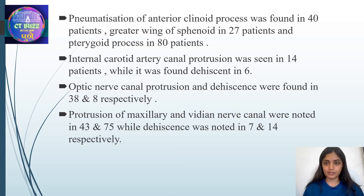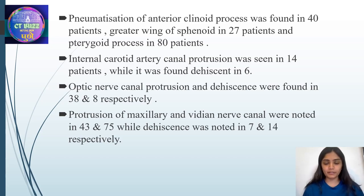Pneumatization of the anterior clinoid process was found in 40 patients, pneumatization of the greater wing of sphenoid in 27 patients, and pterygoid process in 80 patients. Internal carotid artery canal protrusion was seen in 14 patients, while dehiscence was found in 6 patients. Optic nerve canal protrusion and dehiscence were found in 38 and 8 respectively. Protrusion of maxillary and vidian nerve canals were noted in 43 and 75, while dehiscence of the two was noted in 7 and 14 patients respectively.